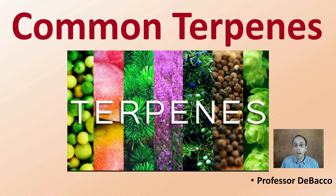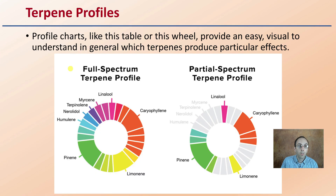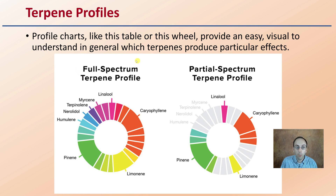Let's go over some common terpenes. We hear a lot about terpene profiles, and profile charts like a table or wheel provide an easy visual understanding of which terpenes produce particular effects. A full spectrum terpene profile basically produces a little bit of all the terpenes, while a partial spectrum terpene profile has only a few select ones present in the particular end product.